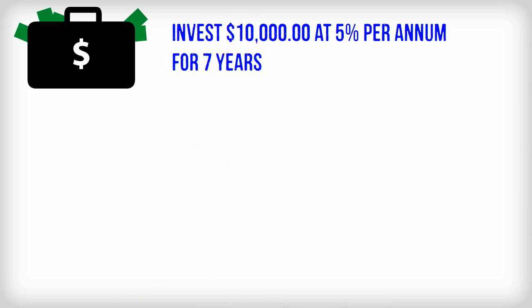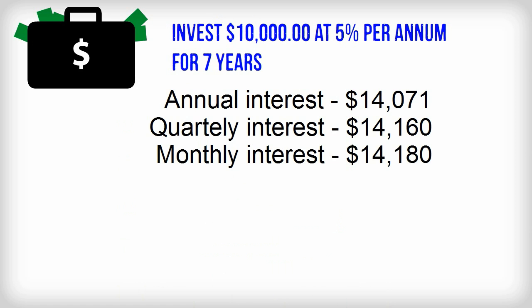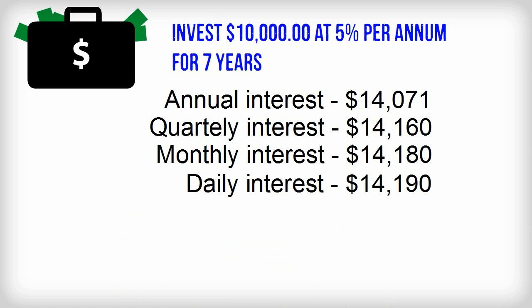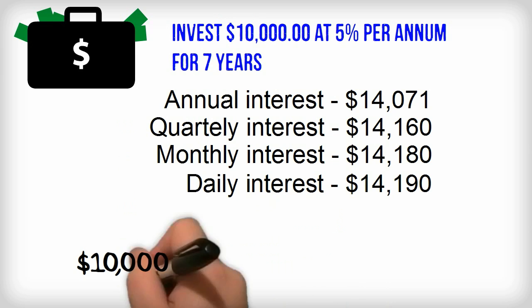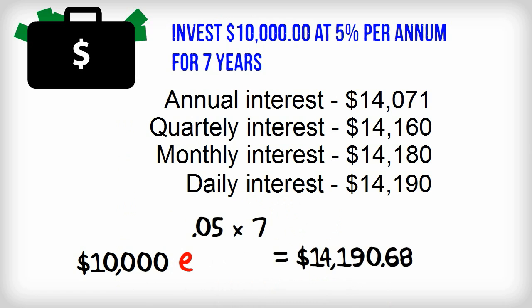Invest $10,000 at 5% for 7 years. As you get interest paid more and more frequently, the amount you end up with gets closer and closer to 10,000 times E to the power of 5% times 7.